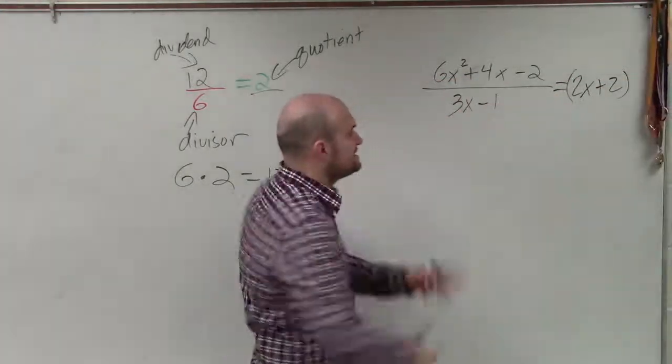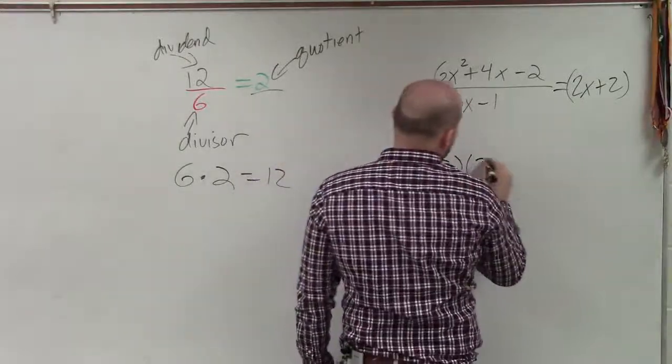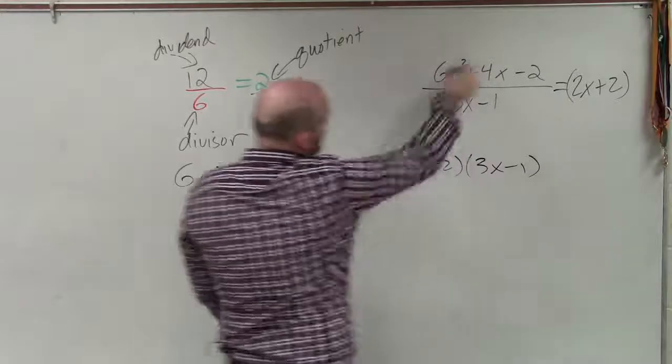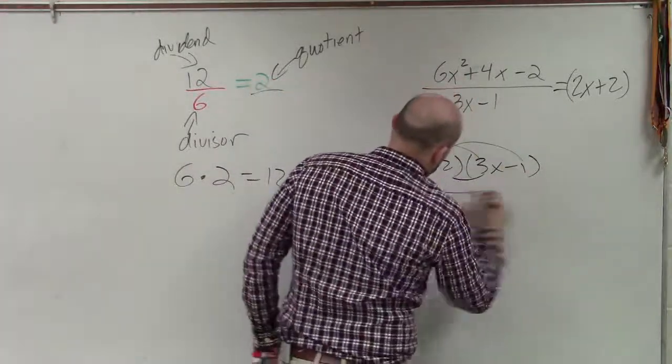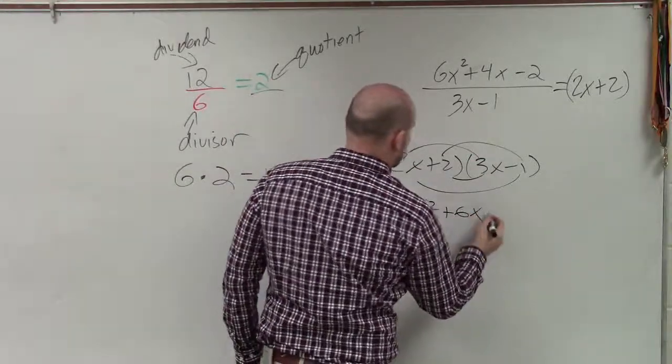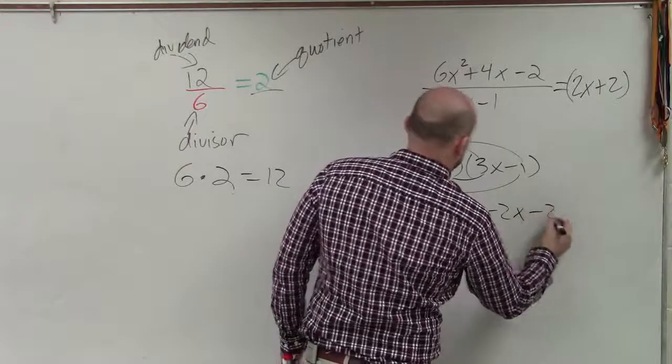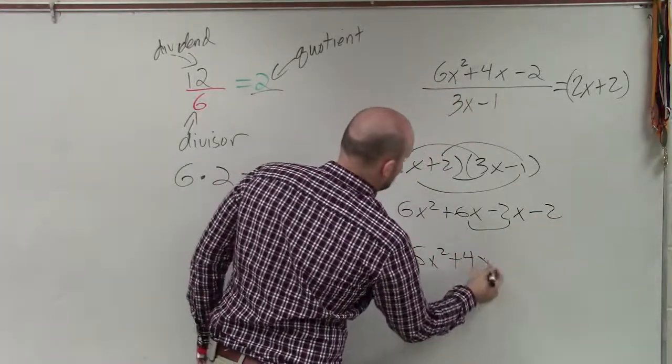What that tells me is my quotient times my divisor equals my dividend. We can apply FOIL to verify this. 2x times 3x is 6x² + 6x - 2x - 2. Combine your like terms: 6x² + 4x - 2.